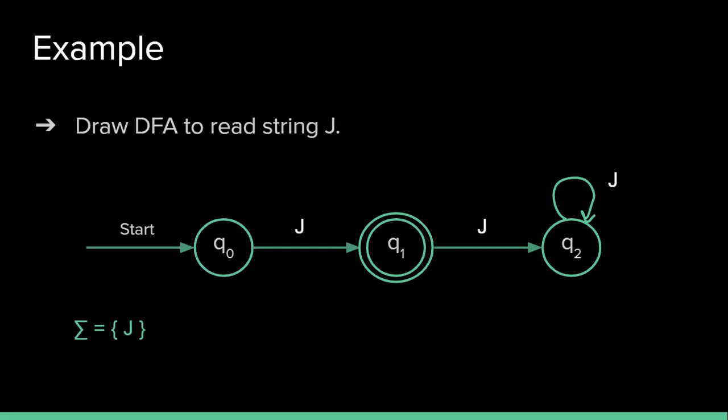So after reading single J, if we try to read any number of J automatically it will go to the state q2 and it will be treated as my error state, dead state, or trap state. Now this DFA is complete.